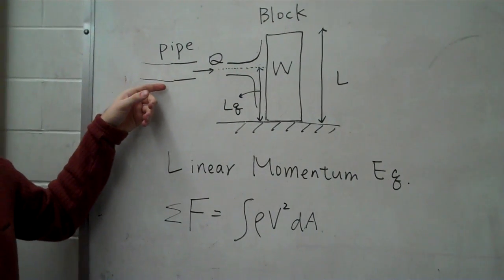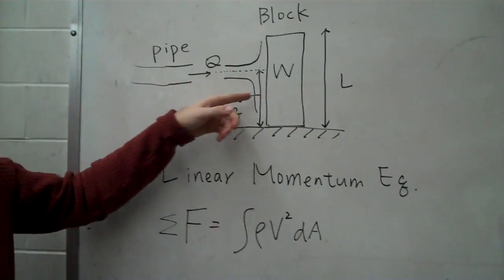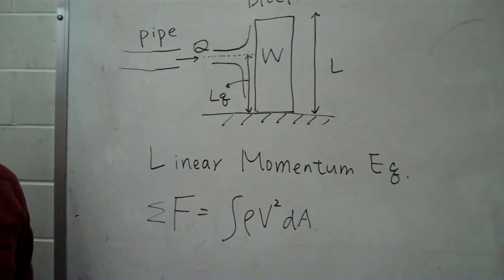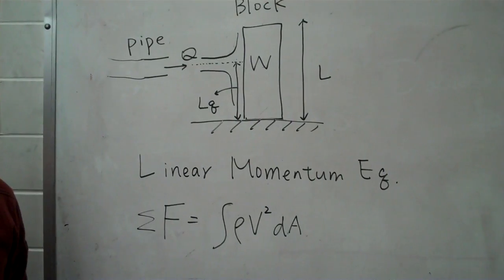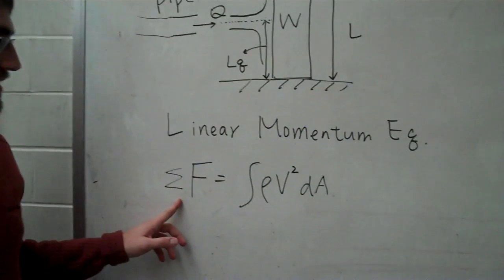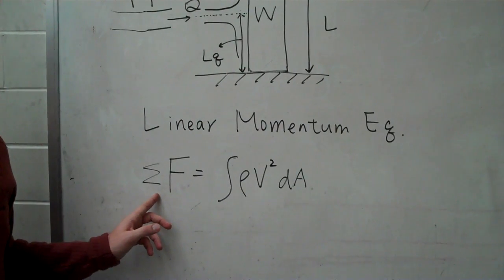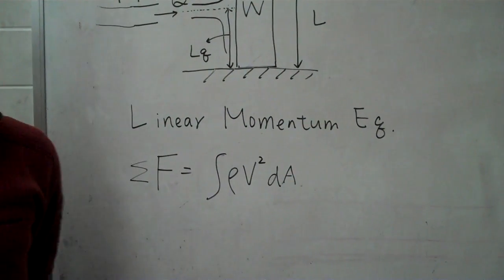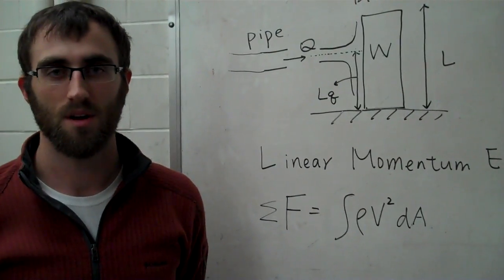We will shoot a jet of water on the block until it tips over, then measure the flow rate that caused it to tip. We will then calculate the theoretical value required to tip over the block and compare the results.